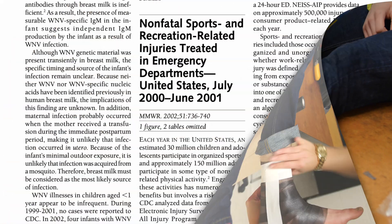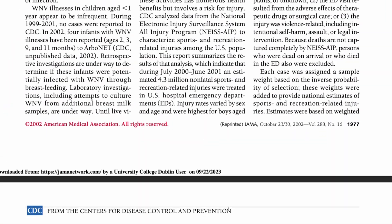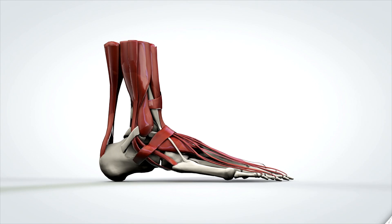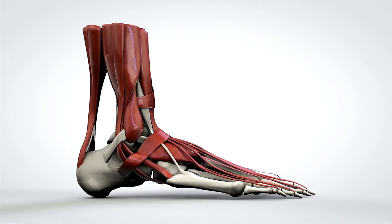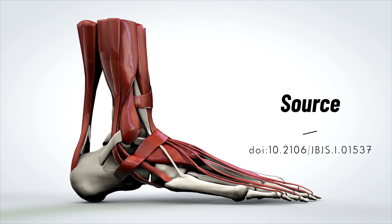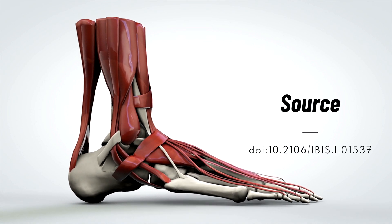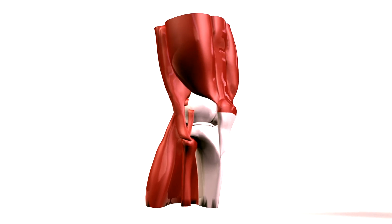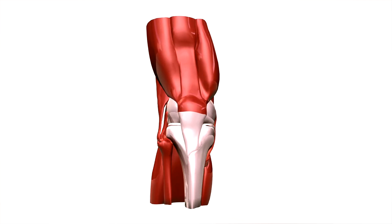In fact, ligament sprains and strains account for about 44% of all sport-related injuries. The most frequently affected joint is the ankle — nearly half of all ligament injuries are ankle sprains. This is followed by the knee, which makes up about a quarter of these injuries.